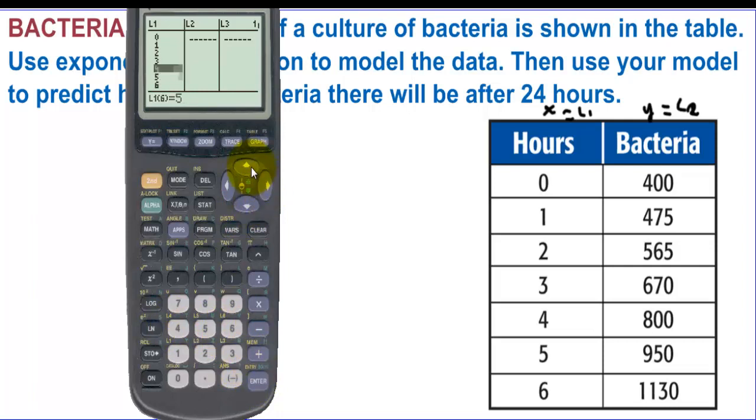And then we'll put the y values into L2. We have 400, 475, 565, 670, 800, 950, and 1130.